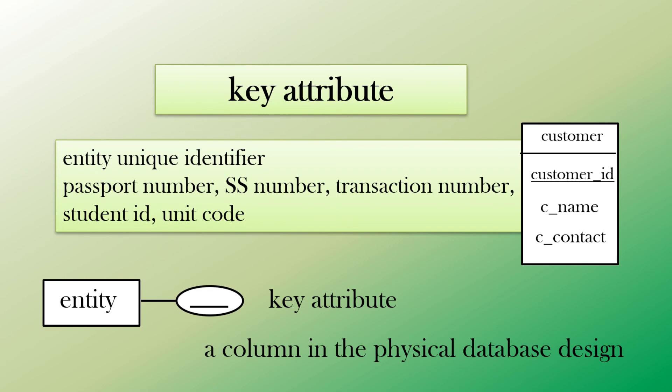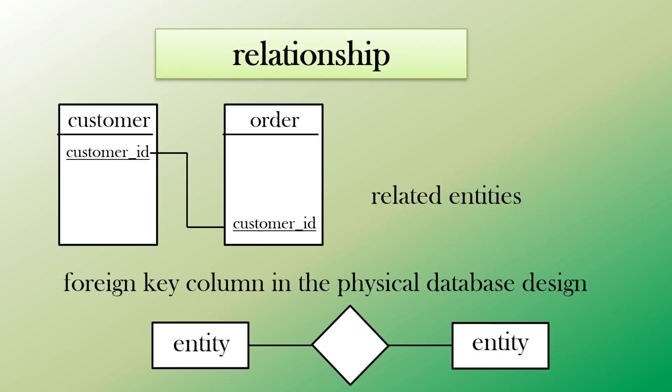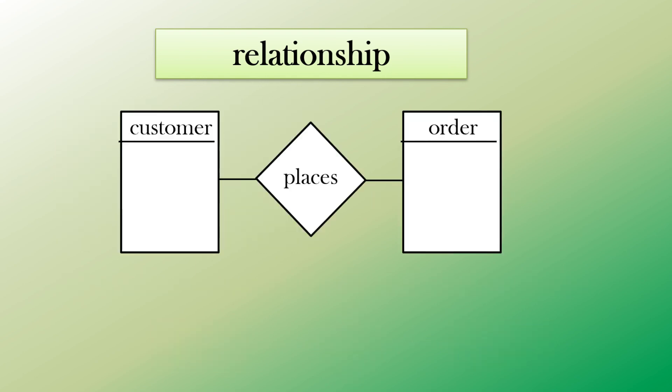The key attribute we can think of as the main attribute, the primary key, the unique identifier. Examples we used previously like passport number, social security number, student ID, or a unique code. To link two entities, we have a relationship. For example, the customer - we have the unique identifier, customer ID. If that's in another table as a foreign key, we can see that links the two tables. In our design, we would have the diamond relationship in between two entities that are related. Here we have customer, and the customer places an order. You can see 'places' in the diamond between the two entities.